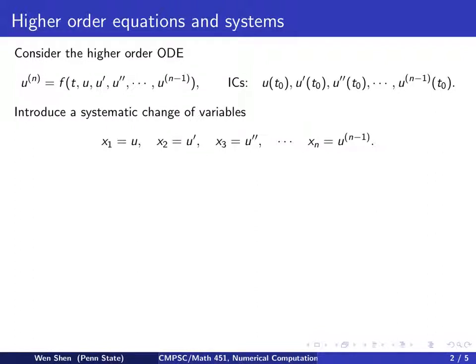We now introduce a systematic way, a change of variable. It will always be this change of variable that would change our scalar higher-order ODE into a system of first-order ODE. Take the unknown u. I'm going to introduce n different unknowns and form a vector of it. x1, the first one, is simply equal to u. x2 will be u prime, x3 will be u double prime. You keep differentiating and get new axes, and xn would be u to the n minus 1 derivative.